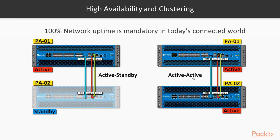In active-active mode, both units forward traffic at the same time, versus active-standby where only one forwards traffic. The benefit is load balancing — both units handle traffic simultaneously. To accomplish this, you configure a virtual IP and set up ARP load sharing, so both firewalls can route traffic and work as a cluster of resources, sending and receiving traffic inbound and outbound.